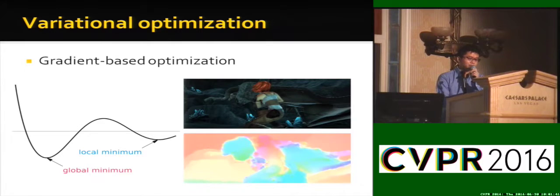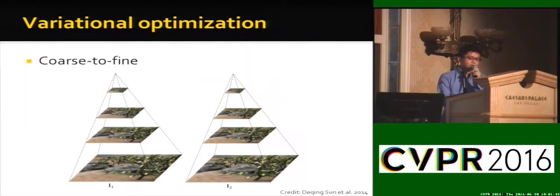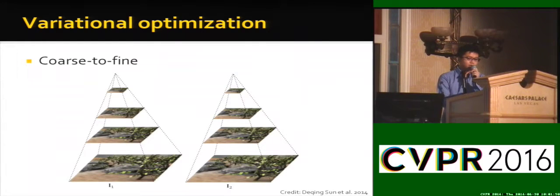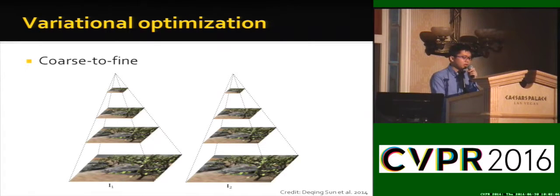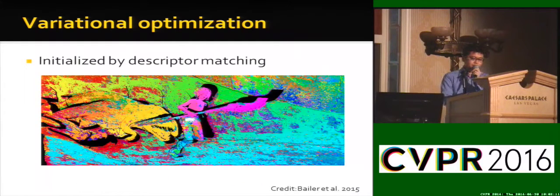It is prone to local minima for large displacement. The coarse-to-fine idea is to get a coarse level first and then use the result to refine. However, the error in coarse levels propagates — so methods use descriptor matching to initialize the flow.